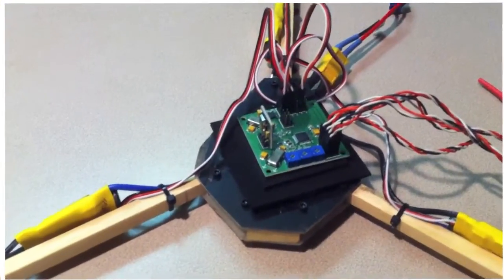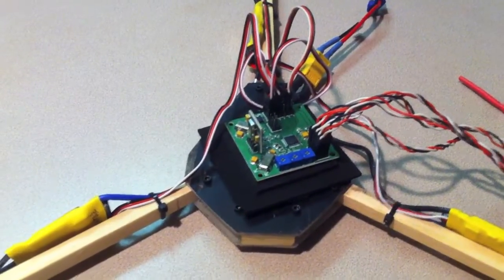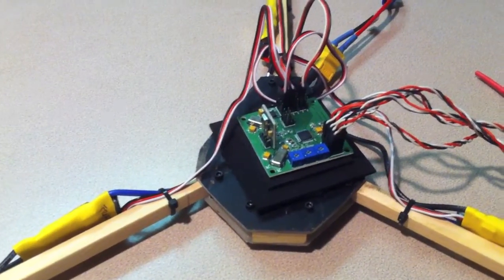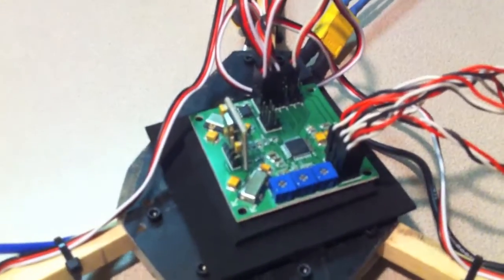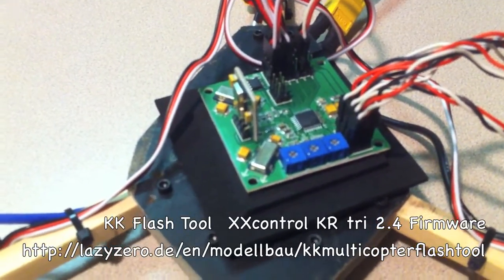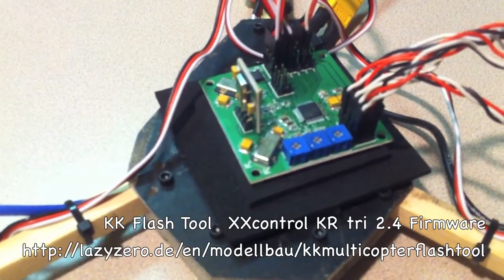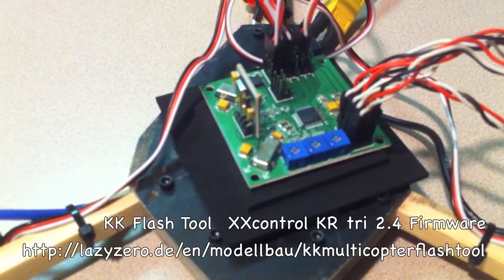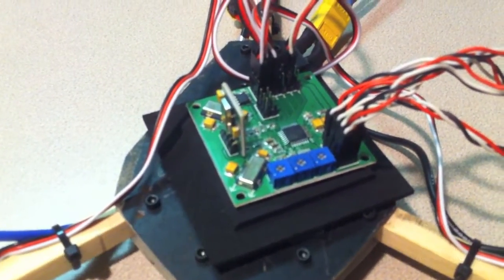This is my RC Explorer SE David Wiedenstahl version 2.5 tricopter. I got a Hobby King version 2 KK board on there that I have flashed with the XX control multicopter KR version 2.4 for the tricopter.